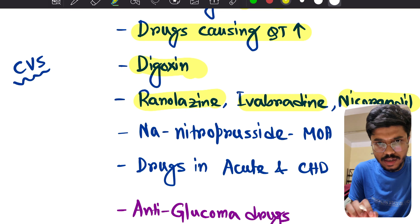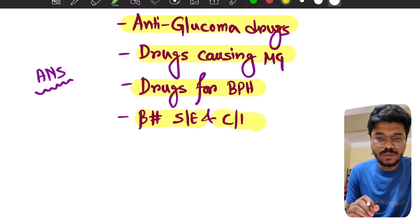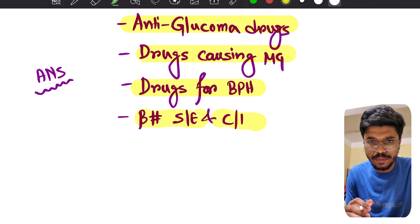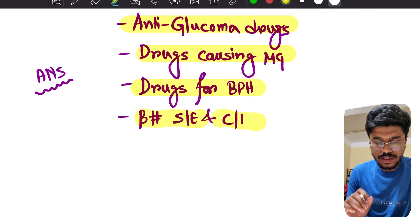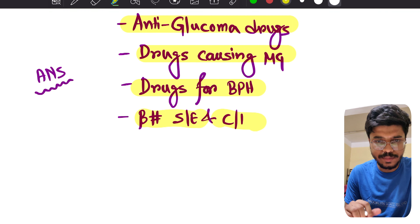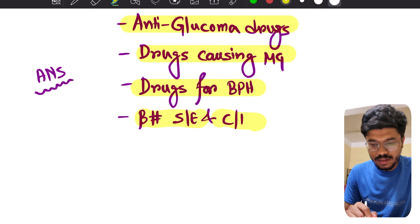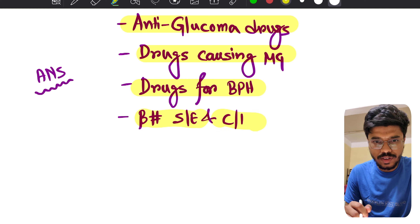Beta blocker side effects and contraindications. So in this video we discuss these three topics — general pharma, ANS, and CVS. The rest of the topics are discussed in the next video, so till then please revise these topics. See you in the next video.